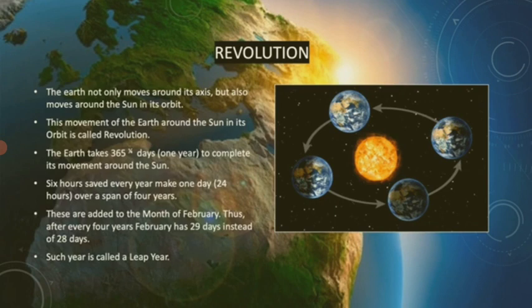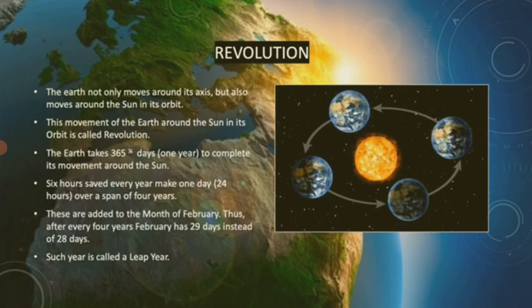Six hours saved every year make one day, means 24 hours over a span of four years. These are added to the month of February. Thus, after every four years, February has 29 days instead of 28 days. Such a year is called a leap year.